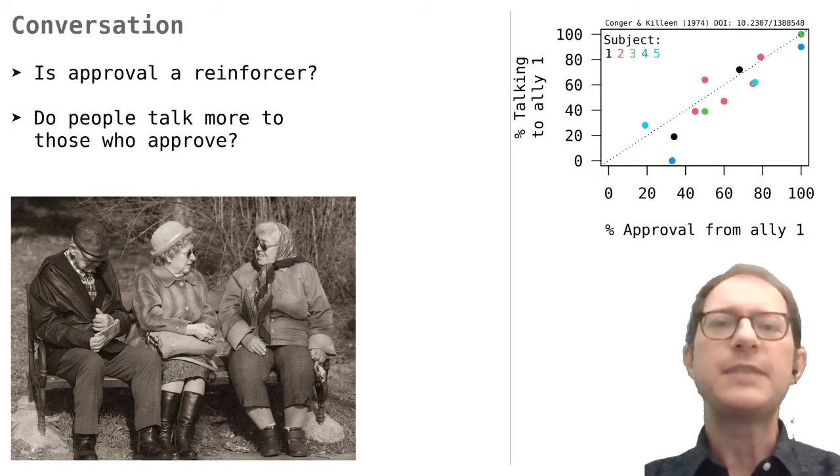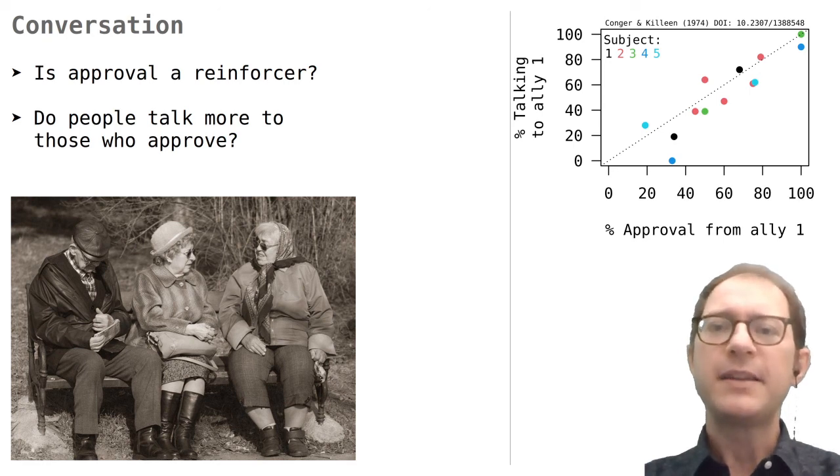These are the results. As you can see, the talking time to confederate 1 is correlated very well with how much approval the person was getting from confederate 1. So, the more a confederate approved of what the student said, the more the student directed his talking to that confederate.